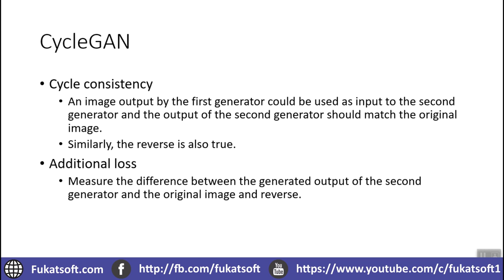There is a concept of cycle consistency in CycleGAN. What we do is input the image to the first GAN, and the output of that GAN is passed as input to the second GAN. The second GAN generates an image from the same domain as the original input. We can then compare that output with the actual input — we don't need an explicit paired example or any actual labeled output. We can compare it with the input to check consistency in our network, and this works in reverse as well.